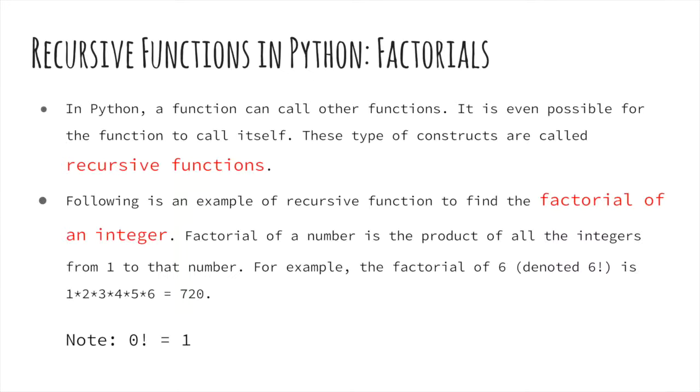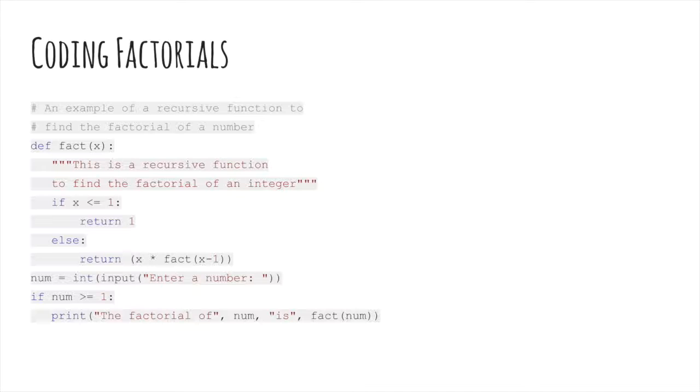Let's have a look at the function. Here we have the recursive function fact. It has an argument x, which is basically the number we want to calculate the factorial of. This function is recursive since it calls itself. When we call this function with a non-negative integer, it will recursively call itself by decreasing the number by 1.